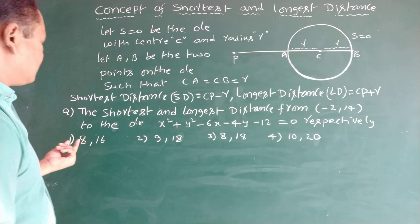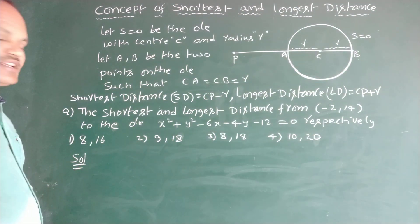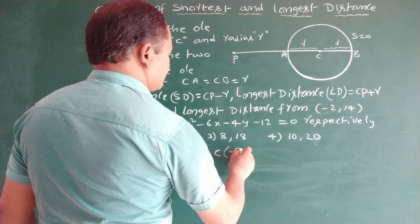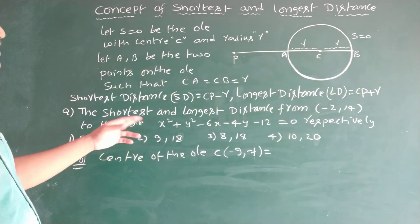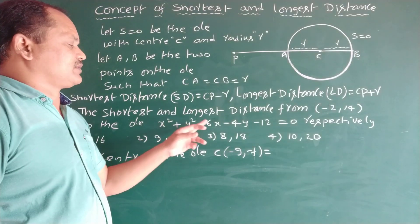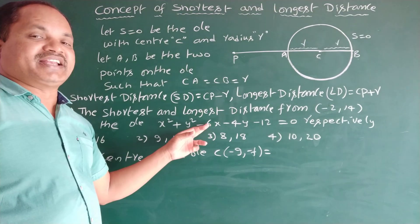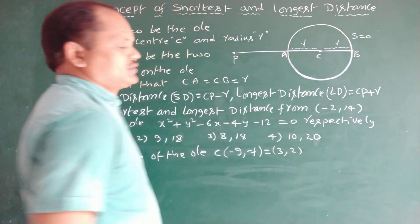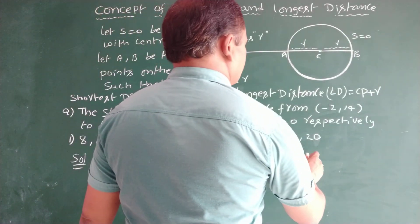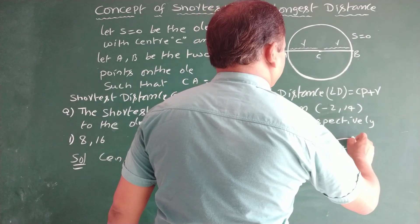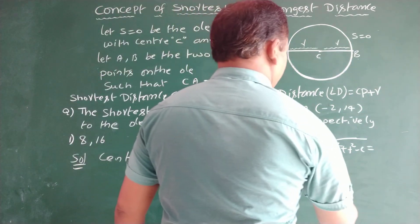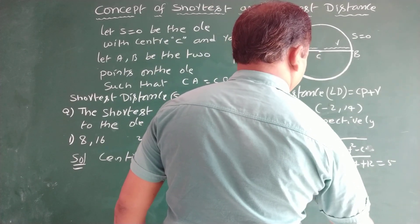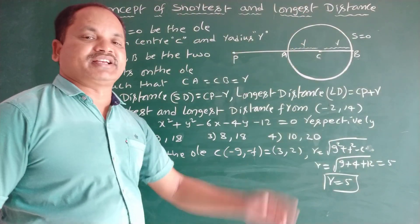The center of the circle is given by (-g, -f). Comparing x² + y² - 6x - 4y - 12 = 0 with the general form x² + y² + 2gx + 2fy + c = 0, the center is (3, 2). The radius R equals √(g² + f² - c) = √(9 + 4 + 12) = √25 = 5. So R equals 5 and center is (3, 2).